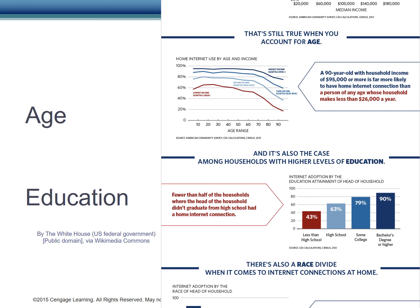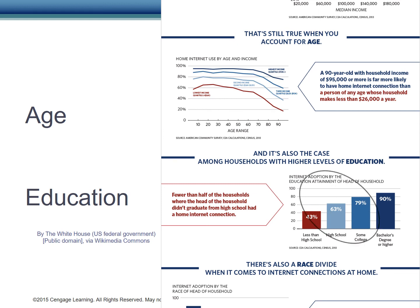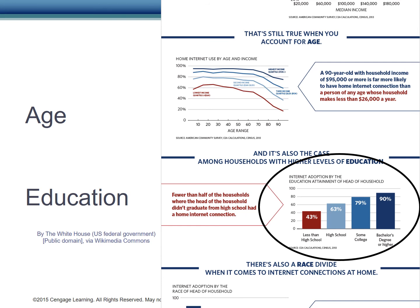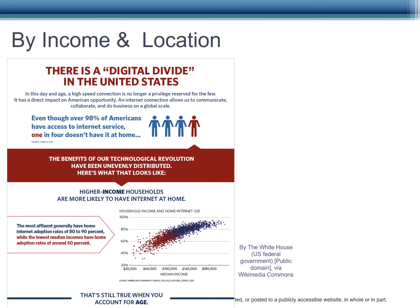We already knew that older Americans were less likely to be online. If we look more closely, however, we see a distinct link between age and income. A person of any age with a higher income is more likely to be online than a person of any age with a lower income. This statistic from the 2010 census shows that education and access levels have been linked for quite some time — 90% of Americans with a bachelor's degree or higher had internet access, while less than half of households with less than a high school education had access.